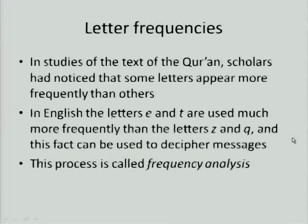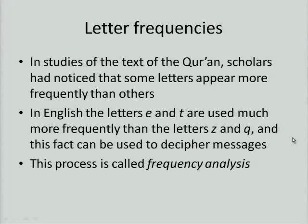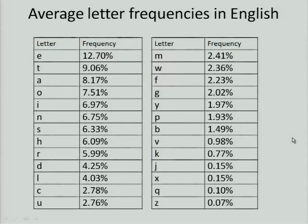There was a lot of interest at this time in studying the text of the Quran, and in doing so, scholars had noticed that some letters appear more frequently than others. As you write in English, you might notice that you use E and T more often than you do Z and Q, for example. This fact can be used to decipher messages — this is a process called frequency analysis. Here are the average letter frequencies in English. The most frequent are E, T, and A, and the least frequent are X, Q, and Z.